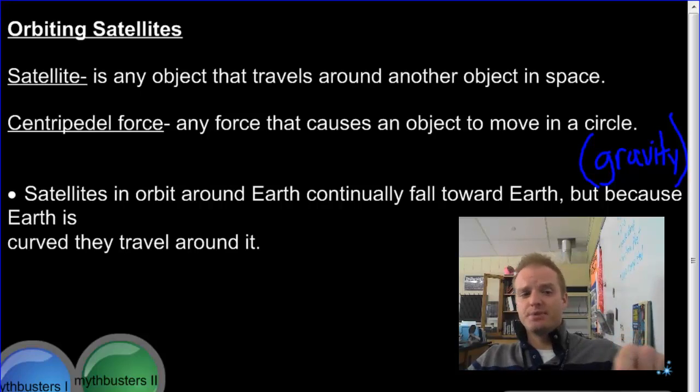So a satellite is falling around Earth but never falls toward Earth because it's moving too fast. Satellites in low orbit around the Earth, they circle the Earth every 90 minutes. So they see a sunrise or a sunset every 45 minutes. That's pretty quick. They're moving.